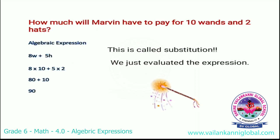Then how much will Marvin have to pay for 10 vans and 2 hats? Here we are going to substitute the values for w and h. The value for w is 10 and the value for h is 2. So 8 into 10 plus 5 into 2, that is 80 plus 10. The total cost is 90 rupees.